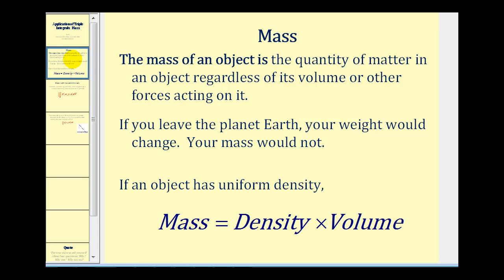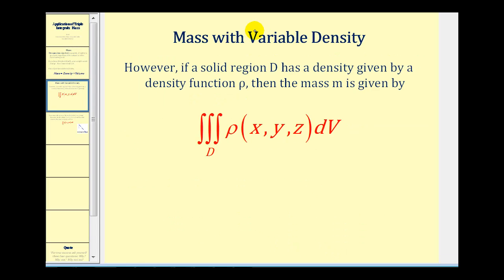If an object has uniform density, then the mass is equal to the density times volume. However, if a mass has variable density, we can still determine the mass using triple integrals. With density given by a density function rho, the mass is given by the triple integral of the density function integrated over the region D, where D represents the boundaries of the solid. Let's take a look at an example.